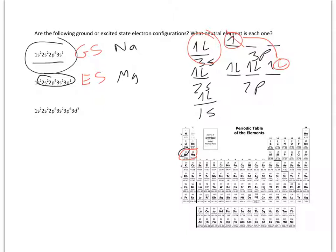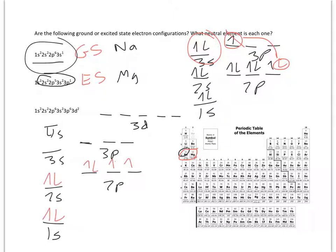All right, so now this last one I'm going to sketch out. All right, so again, if I draw this out, 1s2, 2s2, 2p6, 3s2, 3p6, 3d2, you'll notice I skipped over this whole 4s.